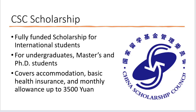If you want to apply for undergraduate, master's degree, or PhD program, then I suggest you go for this scholarship. It covers accommodation, basic health insurance, and monthly allowances up to 3500 yuan. The amount depends on your degree level — for master's, undergraduate, and PhD, you can get a scholarship up to 3500 yuan.